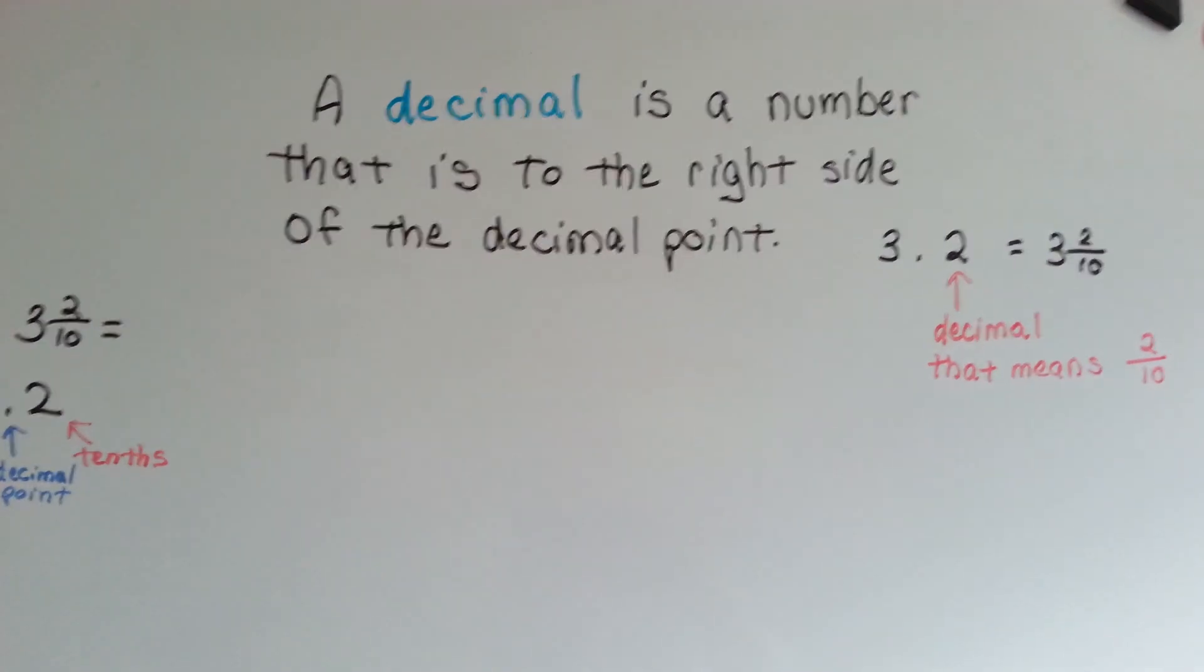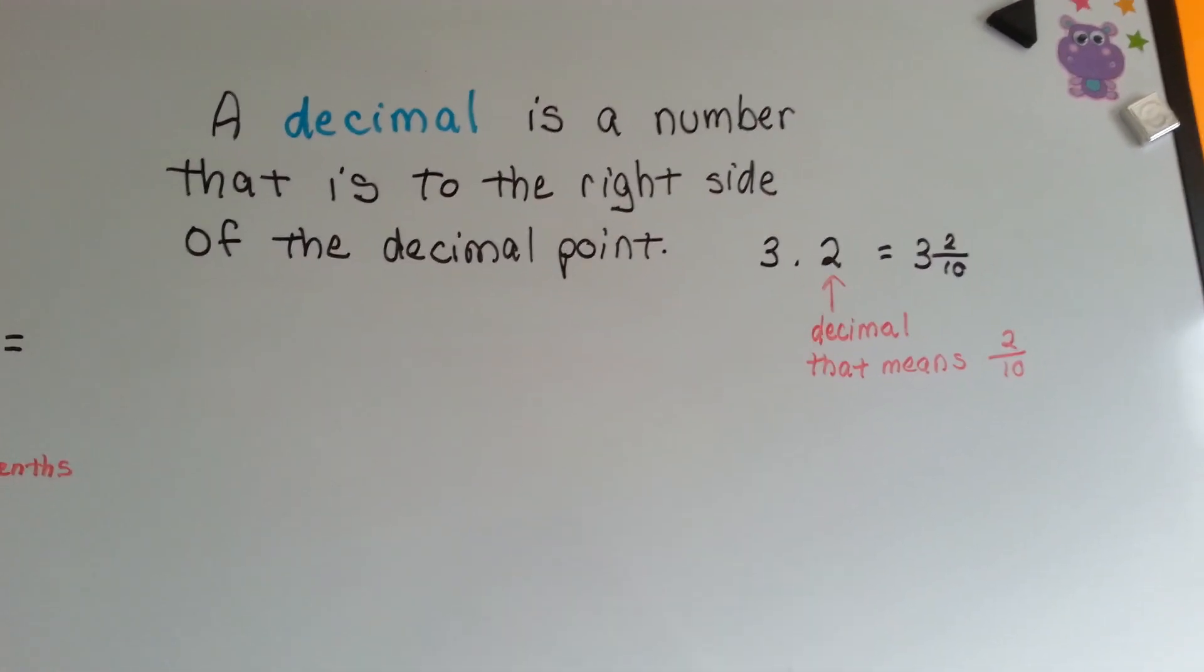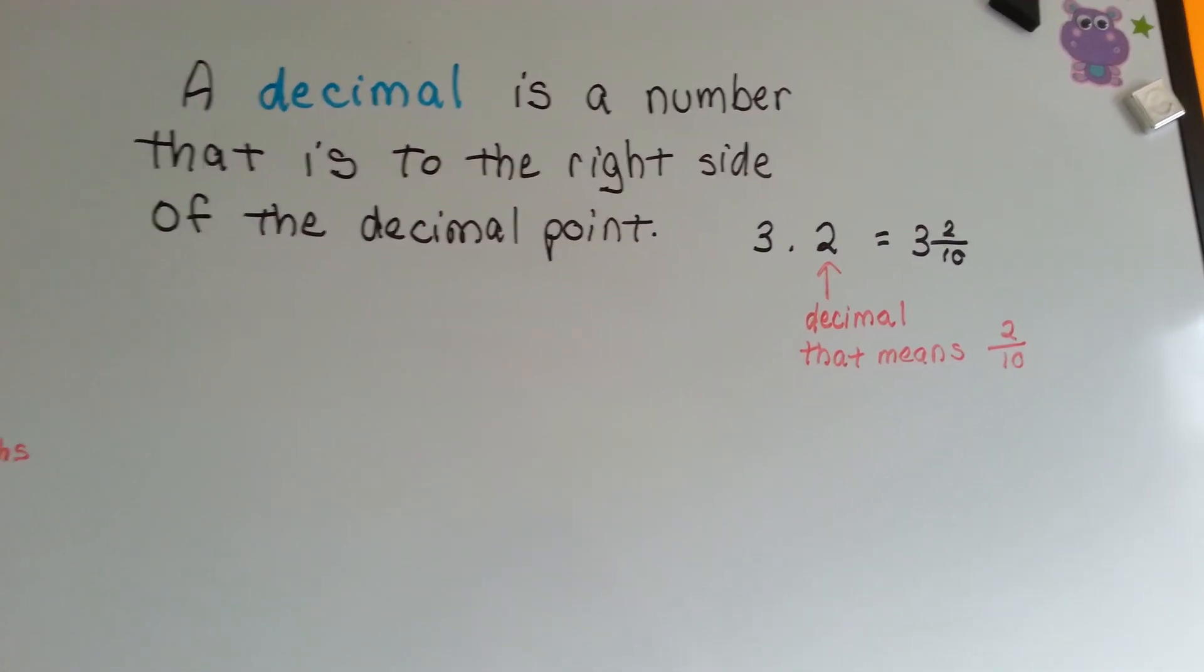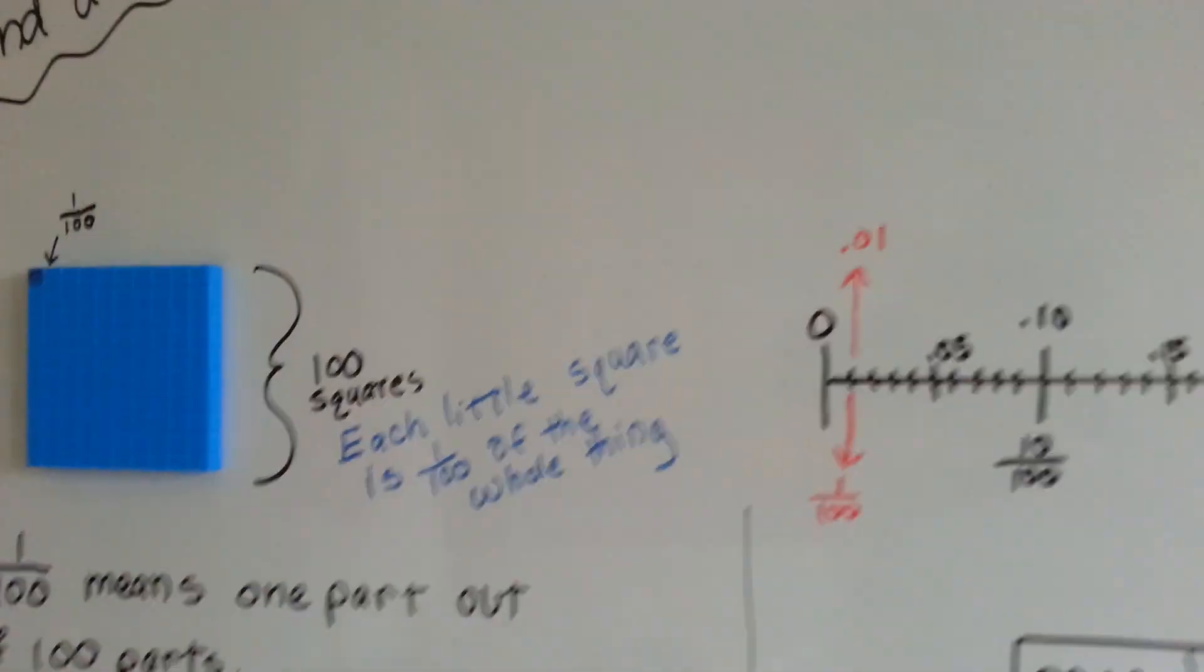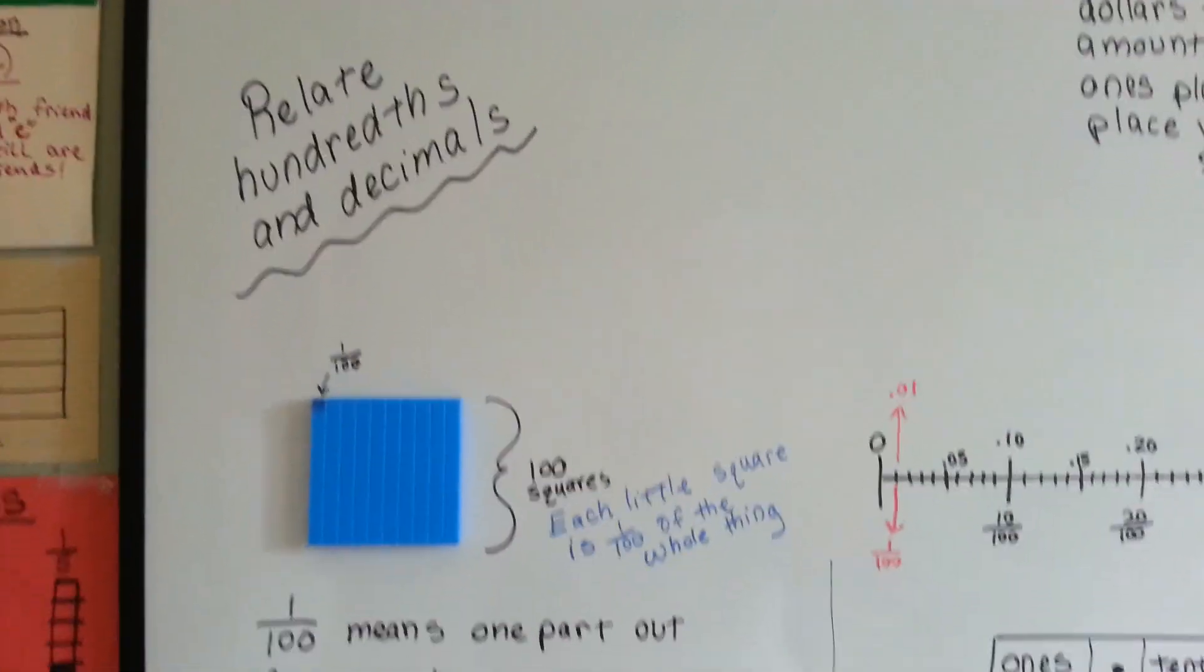A decimal is a number that is to the right side of the decimal point, so that two is a decimal. It represents two tenths. We discussed tenths in video number 84, if you want to go back.